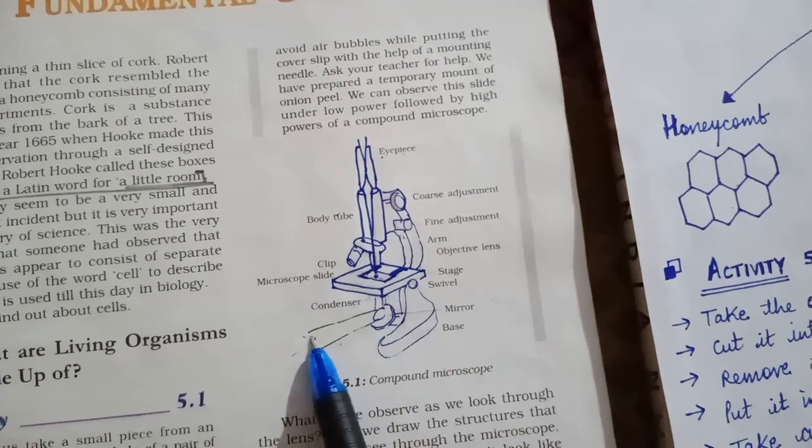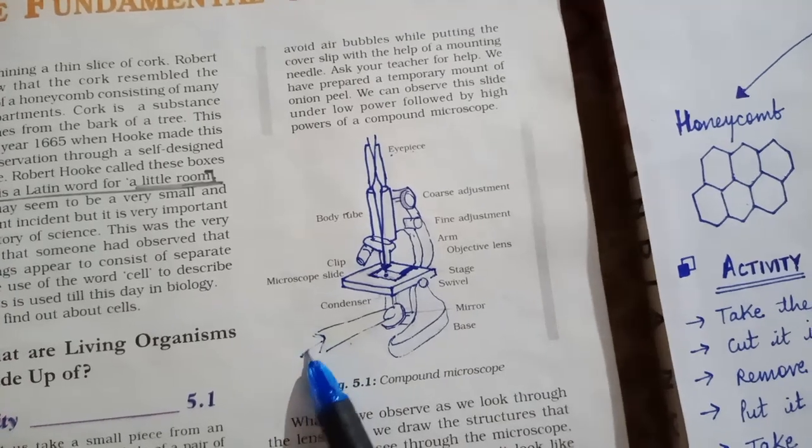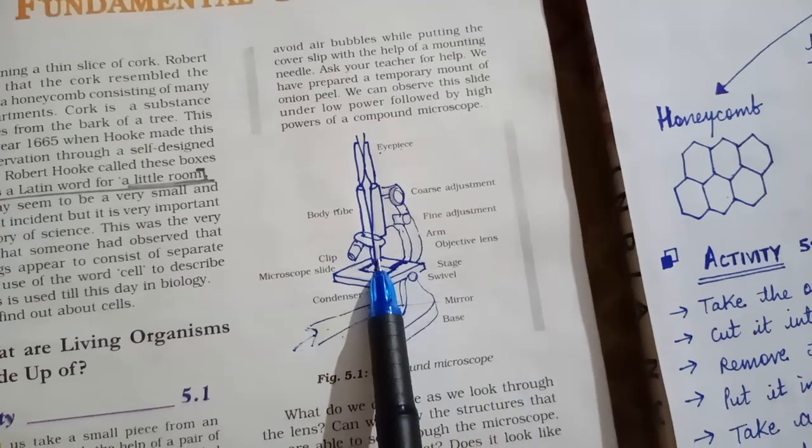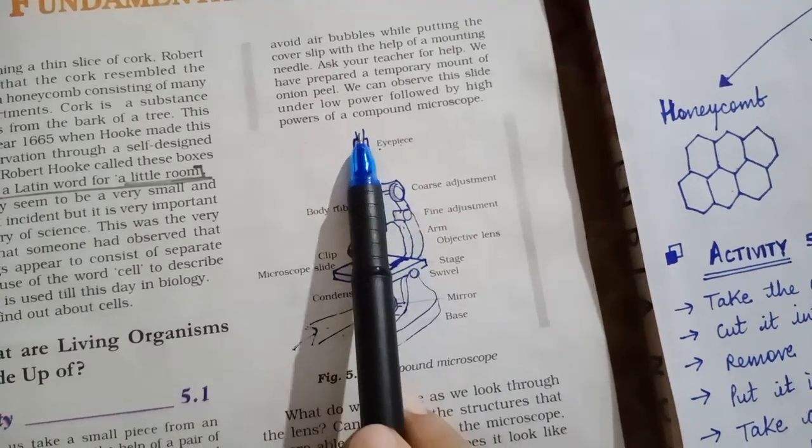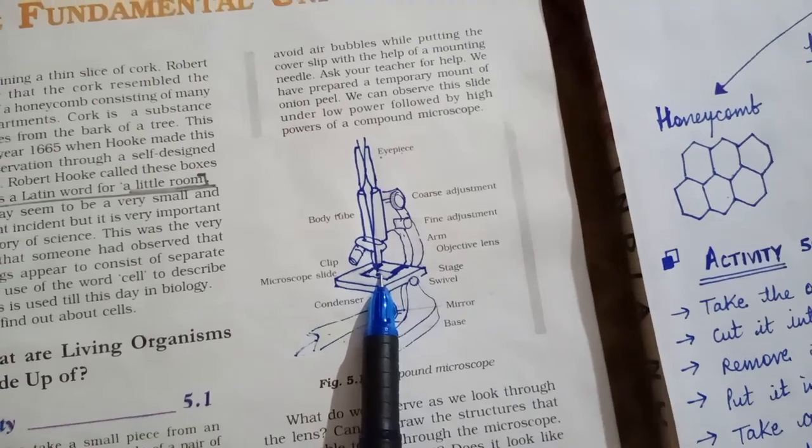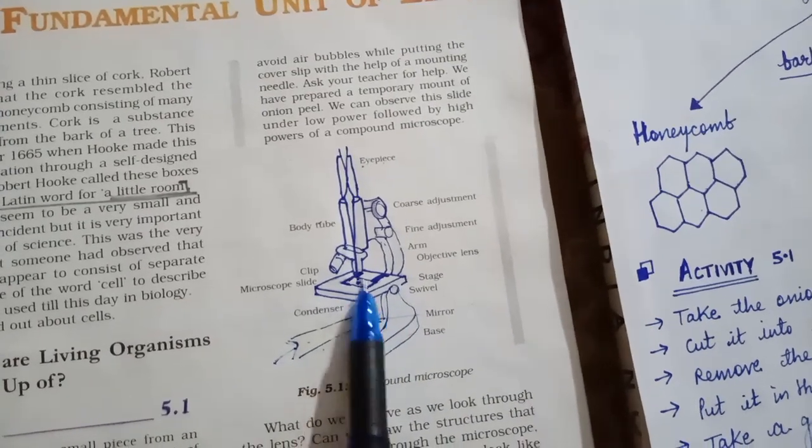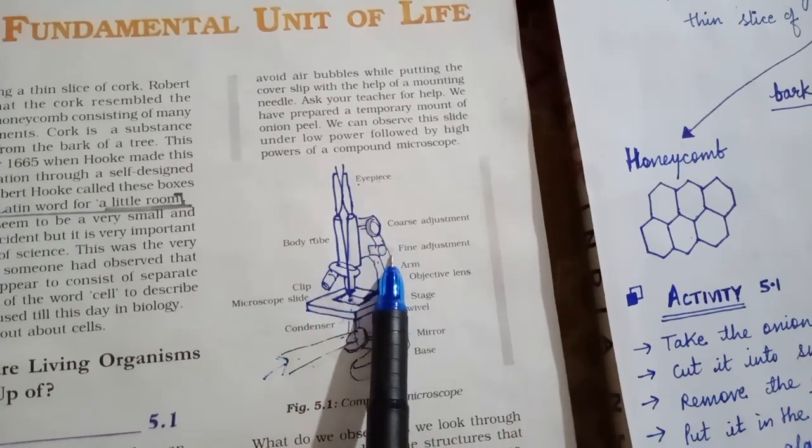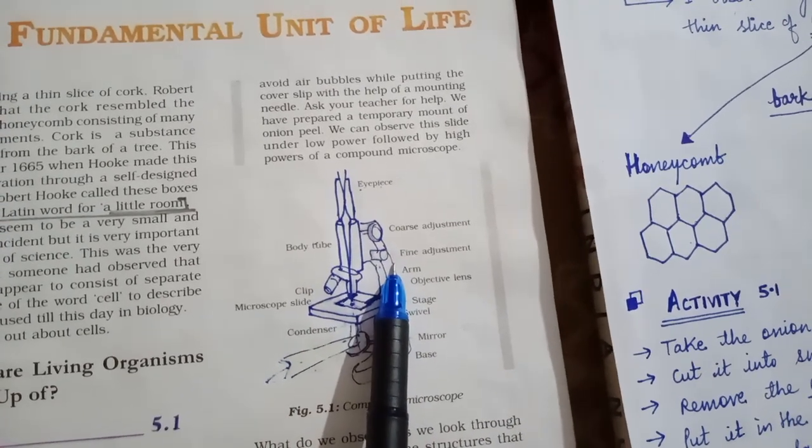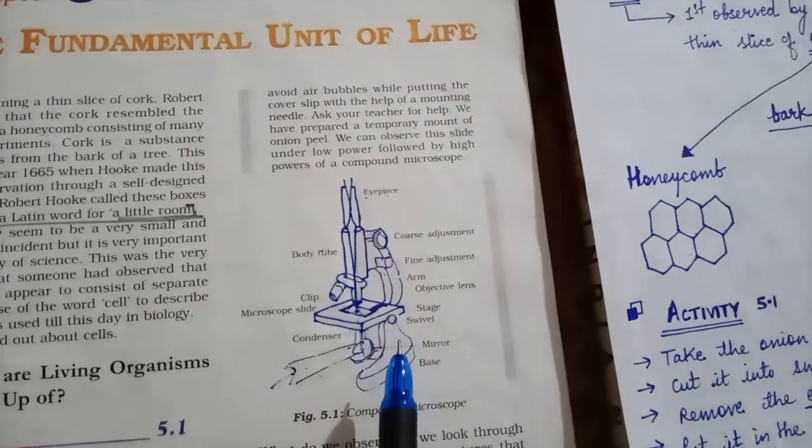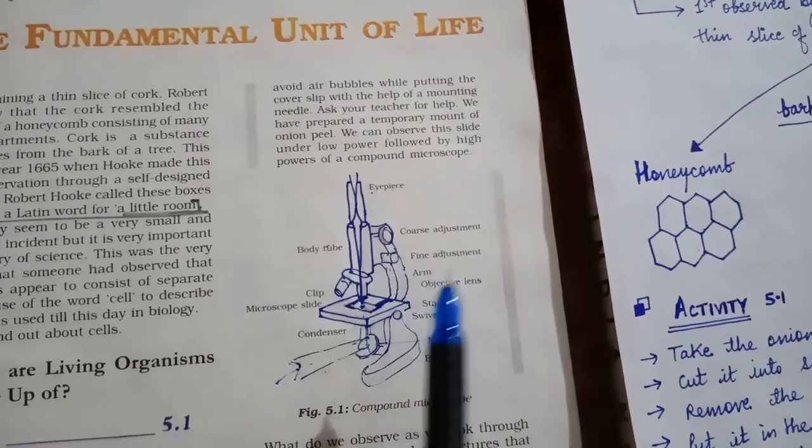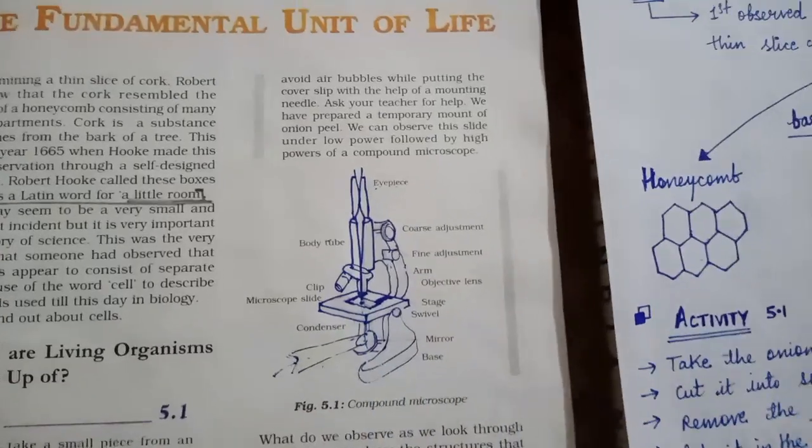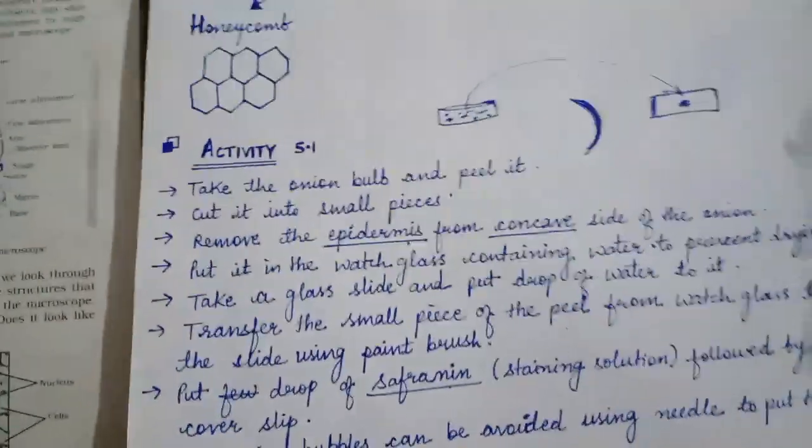And here there is a mirror and from here there will be light source and there will be reflection and light will pass through this. And from eyepiece you can see your slide. And this is the base. Normally coarse adjustment and fine adjustments are used for the magnification to adjust the microscope so that we can observe the slide under the microscope.